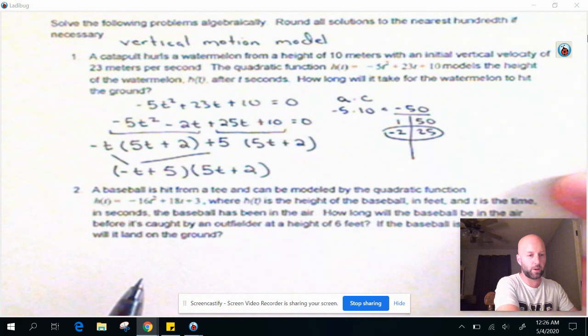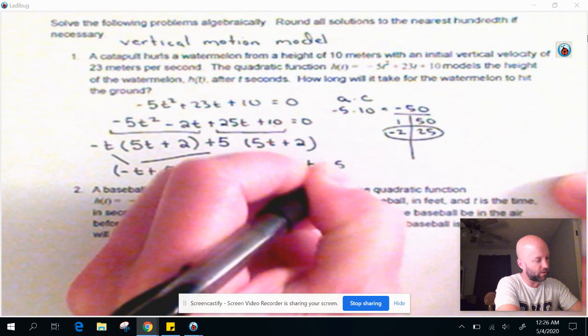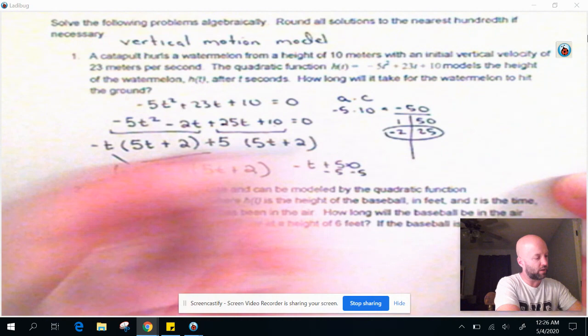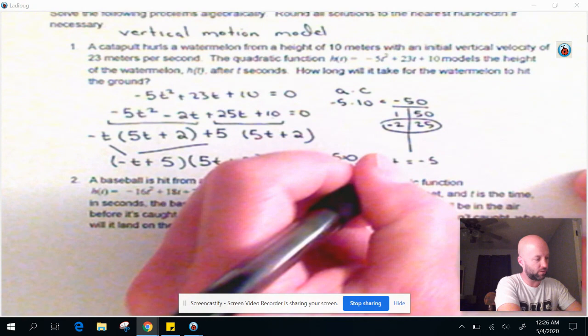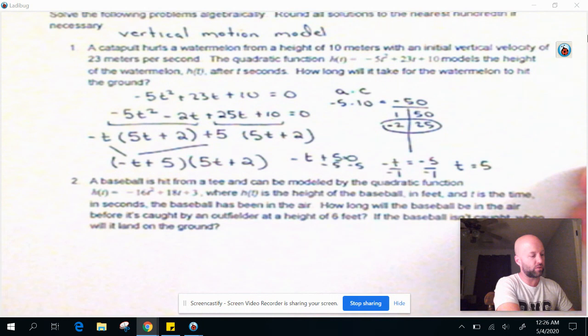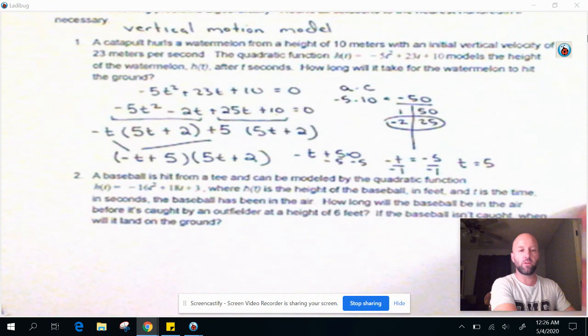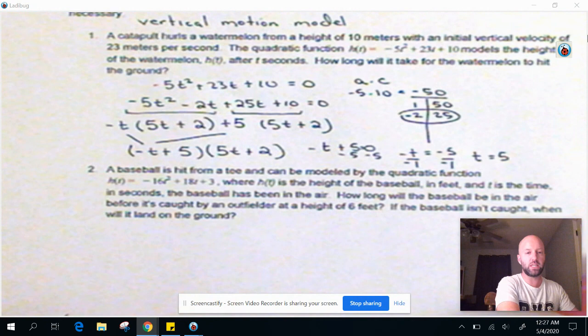So we're going to say -t + 5 = 0. So we'll do minus 5, minus 5. That leaves us, kind of running out of space here, leaves us with -t = -5. Well, we want to know what t equals, not negative t. So we will divide by negative 1, divide by negative 1. So one of our solutions is 5. Now, the other solution, let's go take a look at it.